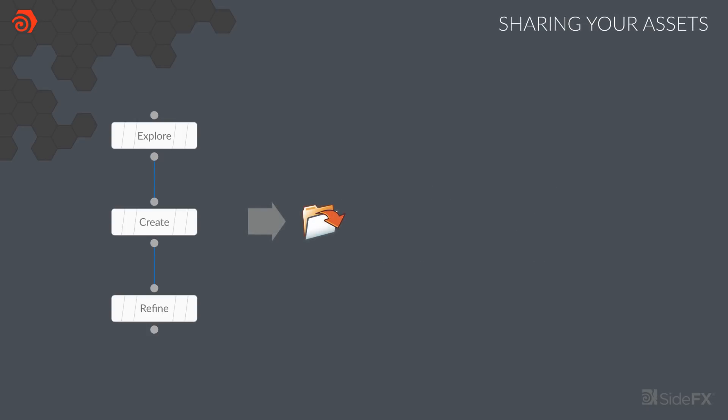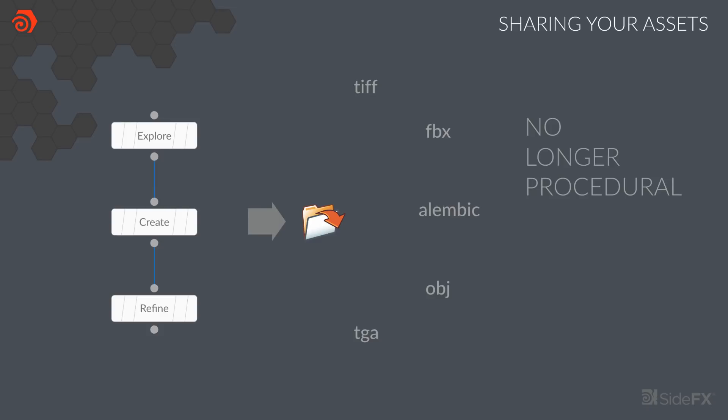The traditional way to share your work would be to save out to a common interchange format. You could render or bake out to TIFF or TARGA, or export to an FBX or Alembic file. The issue is that this is no longer procedural and the flow of data in the nodes will be flattened. This approach can be good for some workflows, such as creating real-time effects, generating high-res meshes, or exporting character rigs, but if you want to retain the procedural nature of the network, then we need a different approach.